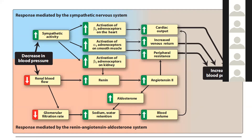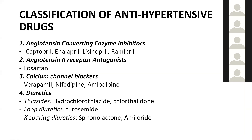The antihypertensive drugs we will discuss affect all these mechanisms — beta adrenoreceptor blockers, alpha-1 blockers, and drugs acting on the renin-angiotensin-aldosterone system. The classification includes: first, ACE inhibitors such as captopril, enalapril, lisinopril, and ramipril — remember the '-prils' for ACE inhibitors — and second, angiotensin 2 receptor antagonists, the ARBs, such as losartan.